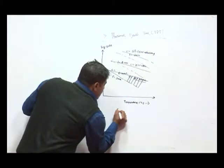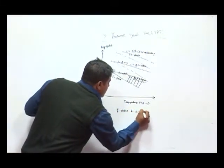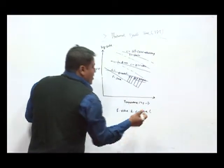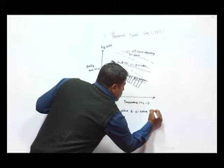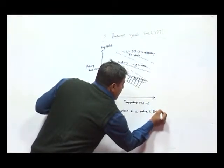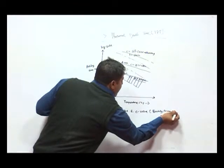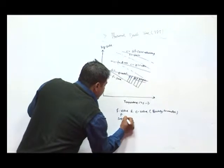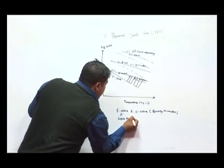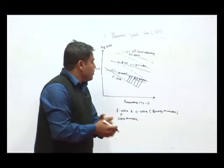Because of this F value and C value, C value is totally dependent on the quality parameter. And this F value is the safety parameter. We can control the process.